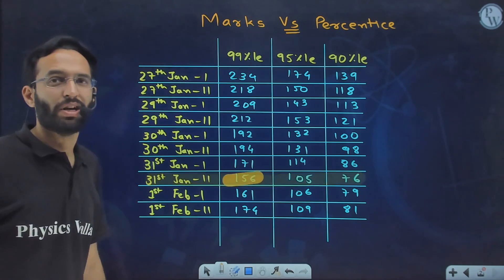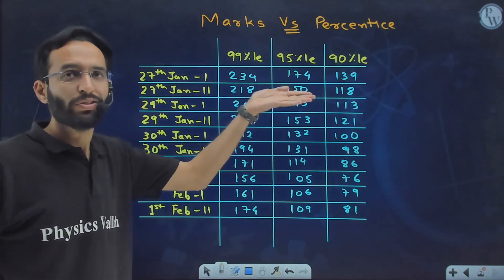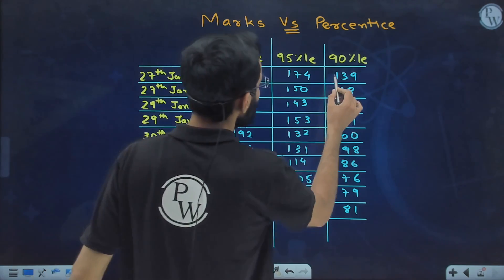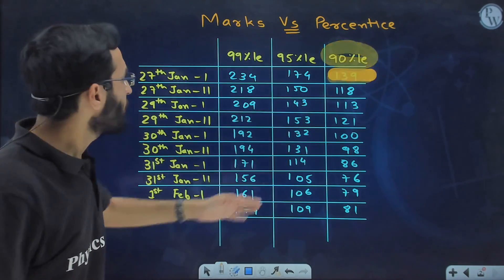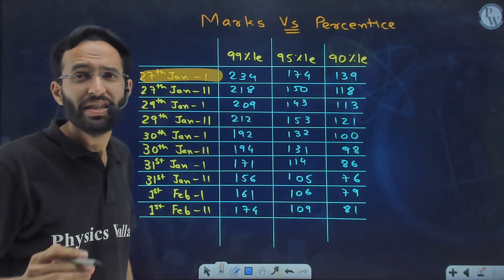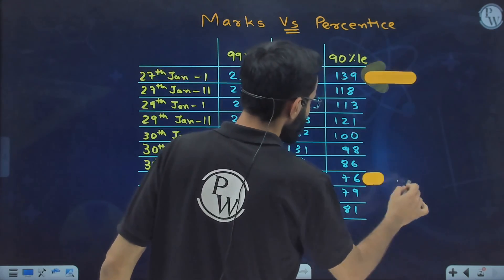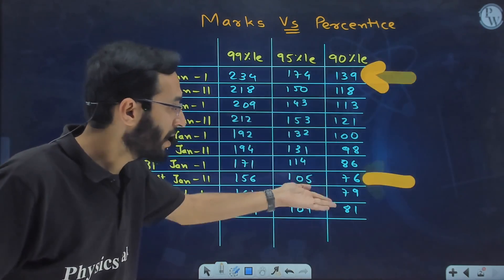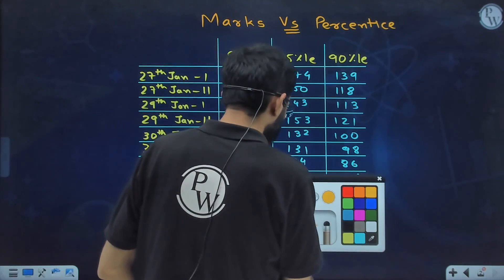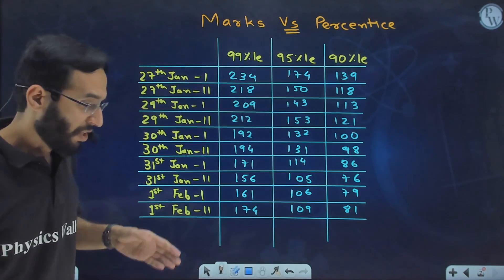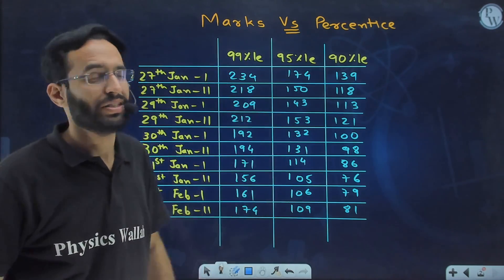Now discussing the easiest paper: 27th January Shift 1, where students needed 139 marks to get 90 percentile. See the huge difference — 139 marks versus 76 marks. This kind of large difference between easiest and hardest shifts is being encountered in JEE Mains history this year only. That is why this marks-versus-percentile analysis is the most shocking for this year.